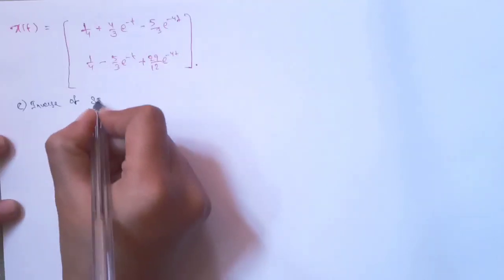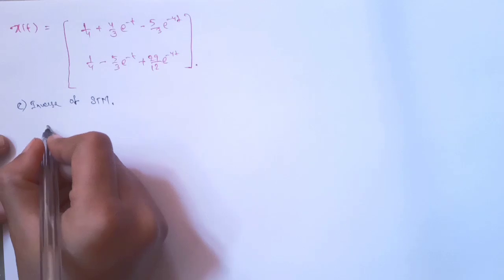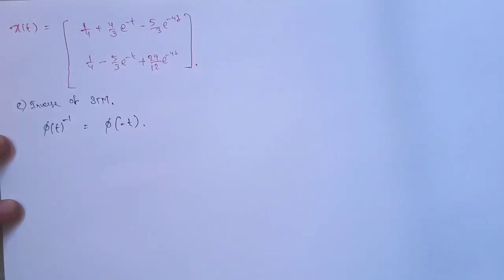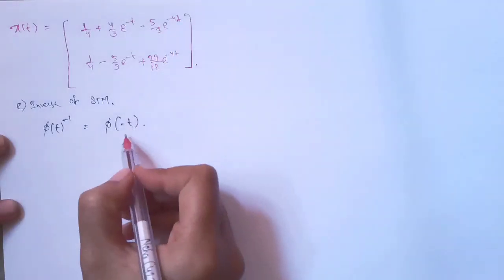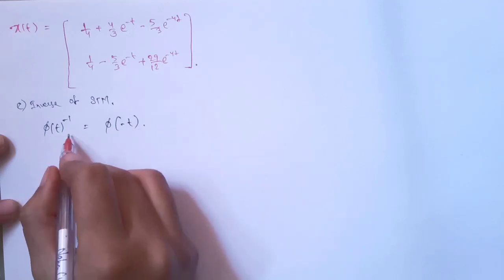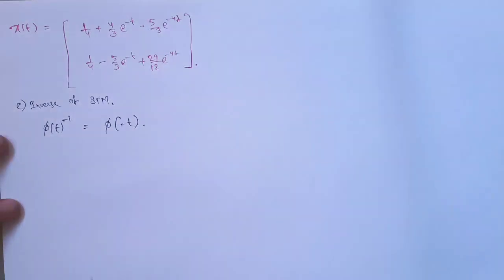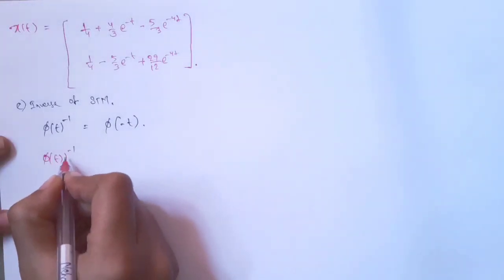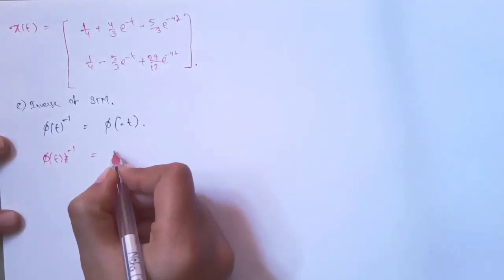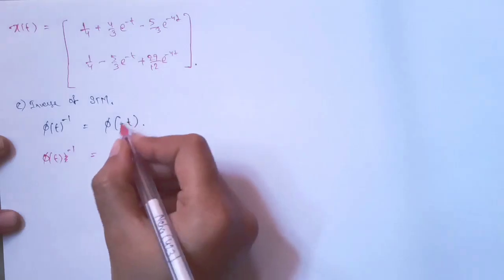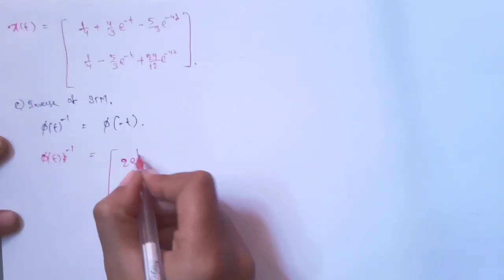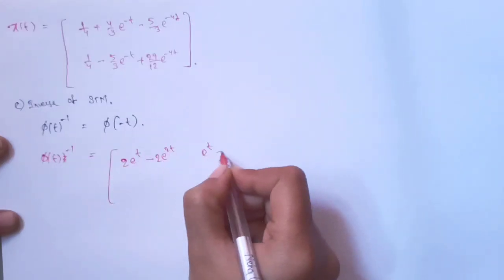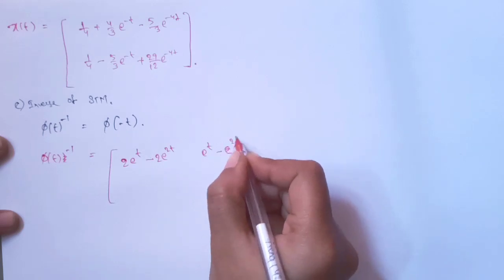To calculate the inverse of the state transmission matrix, there is a property: we replace t with −t. So φ(t) inverse equals φ(−t). Substituting −t into φ(t) gives elements such as e^(2t) and t·e^(2t) in the resulting matrix.